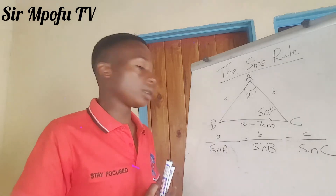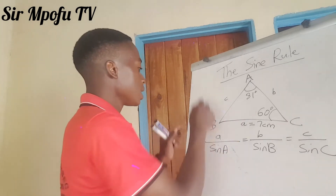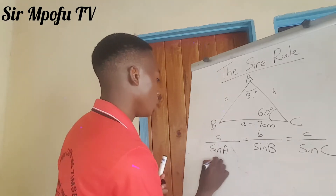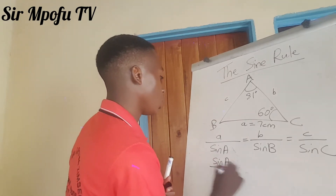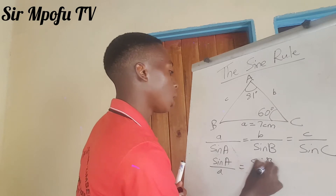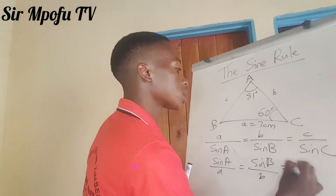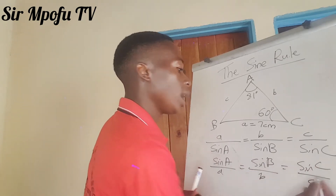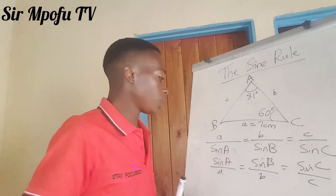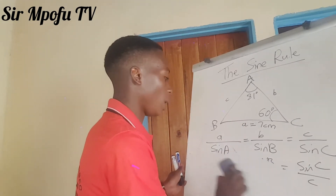Some textbooks will do it vice versa — it's still the same thing. They can say sine A over A is equal to sine B over B, equal to sine C over C. It's still one and the same thing, but I just want you to use the above form.